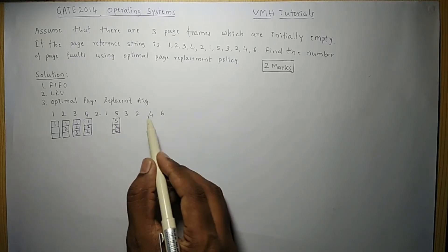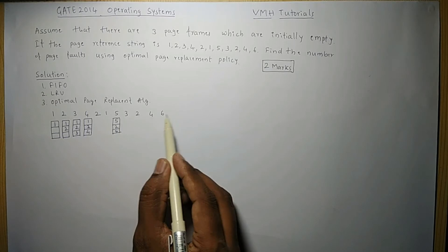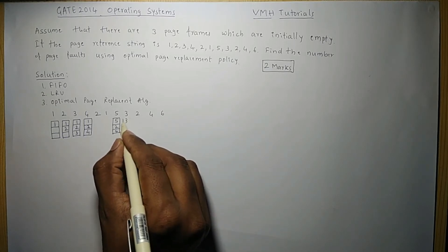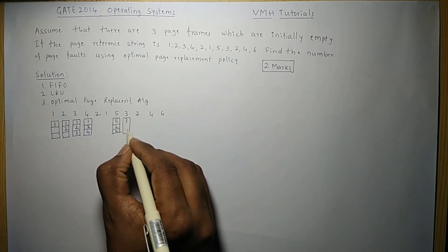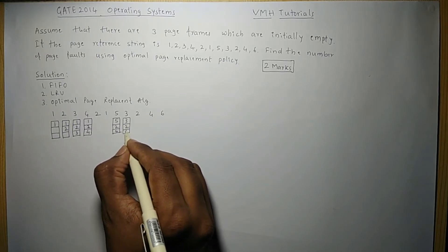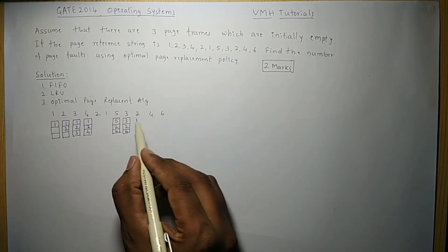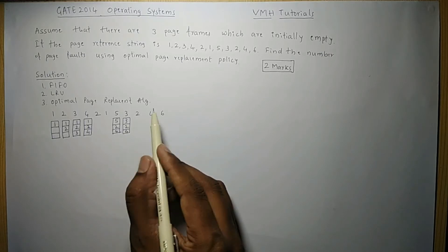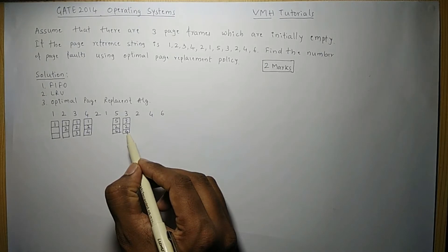Looking at future references from this point: page 2 will be used first, then page 4, and page 5 may or may not be used. So we replace page 5 with page 3. Pages 2 and 4 are kept as they are. The next reference is for page 2, which is already available — no page fault.